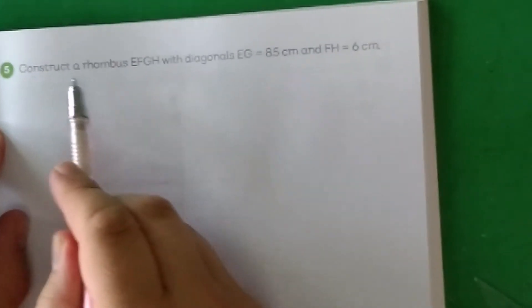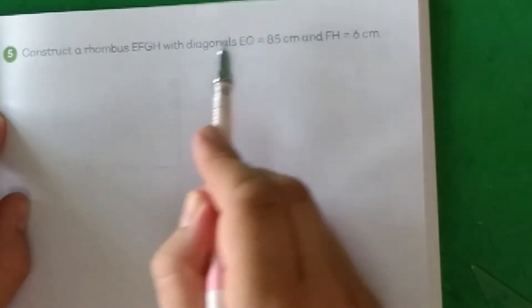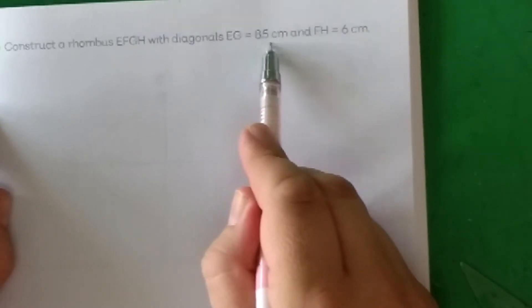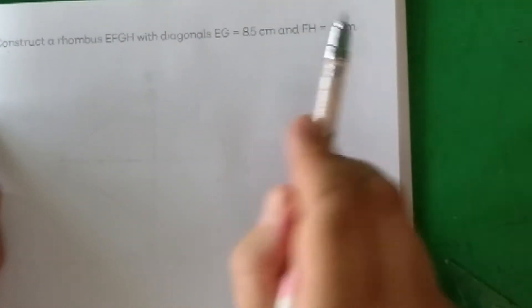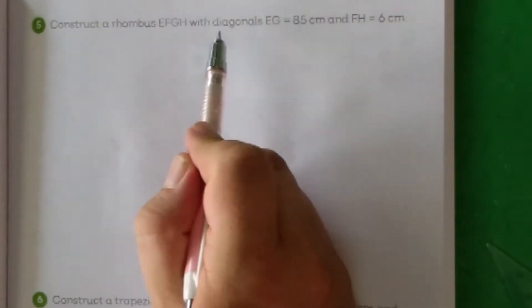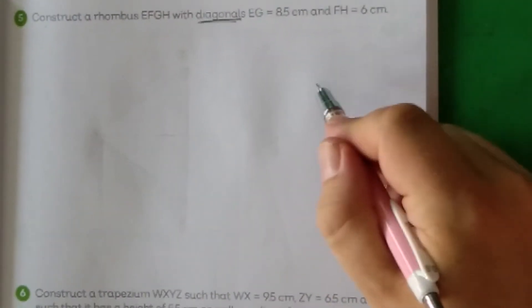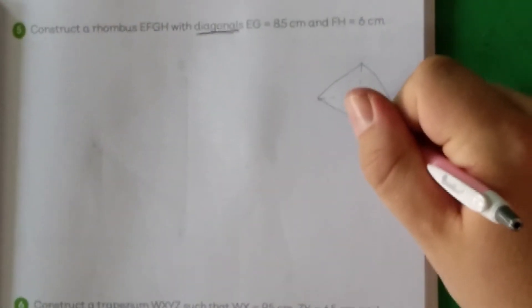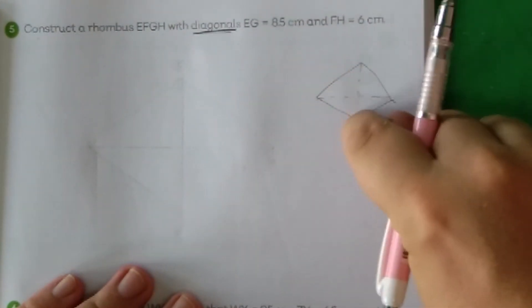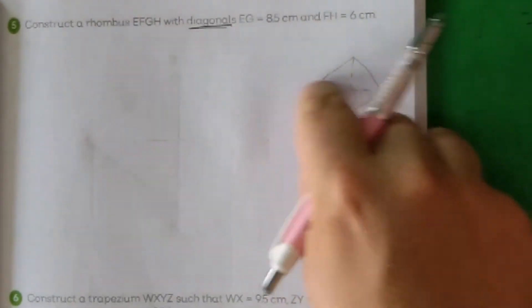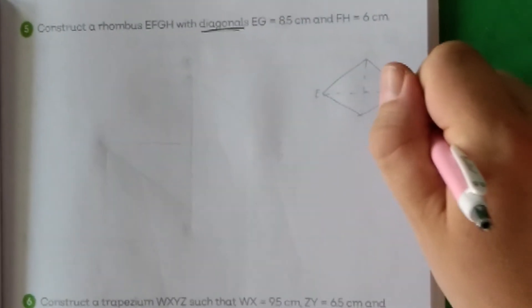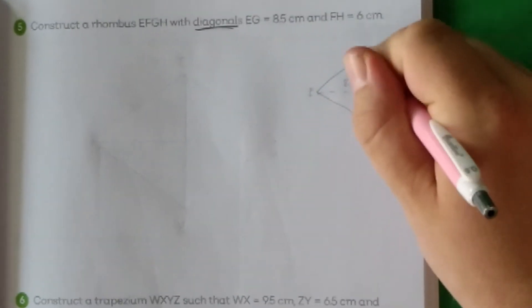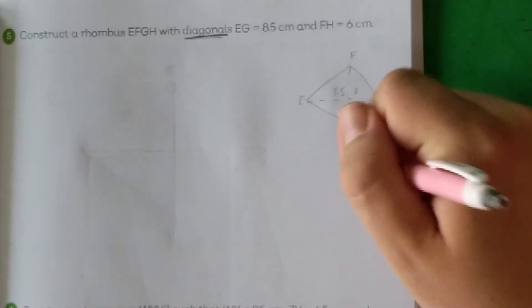Last, we've got a rhombus. Let's read this one together. Construct a rhombus EFGH with diagonals EG which equal 8.5 and FH which are 6 centimeters. The important thing here is diagonals. When we're talking about the diagonals of a rhombus, that's like if you imagine a kite. If you've got your diamond kite shape, the diagonals are the cross-sections. If you had a real kite, you would have sticks that keep the kite together, and these are the measurements that we've got.